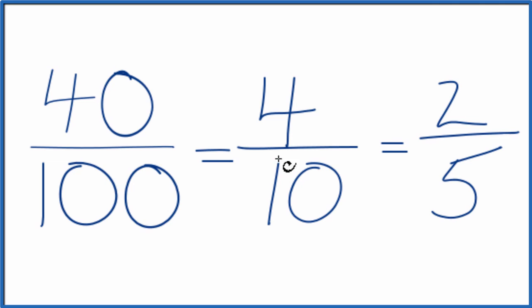So we've simplified the fraction 40 over 100 down to 2 fifths. And these are all equal, they're equivalent fractions. 2 divided by 5, 4 divided by 10, or 40 divided by 100. They all give you 0.4. It's just that we've simplified or reduced 40 100ths down to 2 fifths.